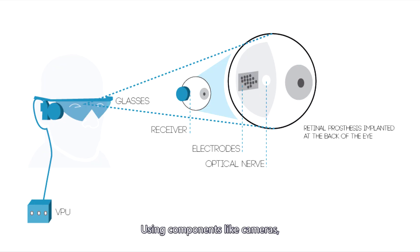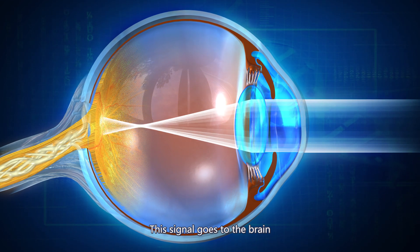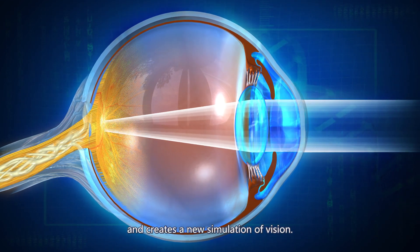Using components like cameras, computers, and electrodes, the prosthesis captures light and converts it into an electric signal. This signal goes to the brain and creates a new simulation of vision.